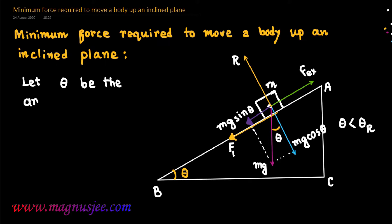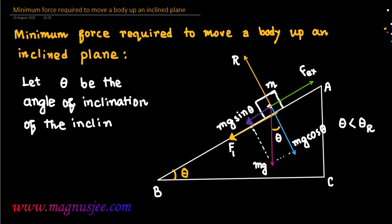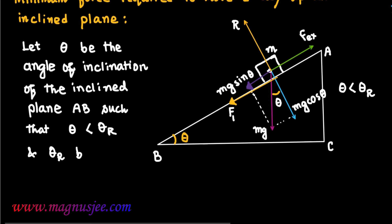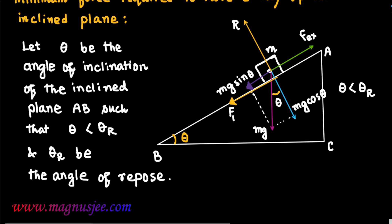Let theta be the angle of inclination of the inclined plane AB, such that theta is less than theta-r, the angle of repose. Since theta is less than theta-r, the body is at rest and does not move down the inclined plane under the action of the rectangular component of the weight mg.